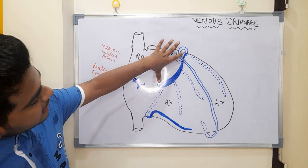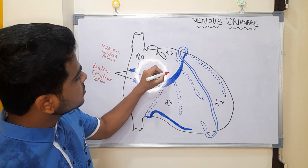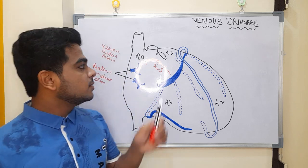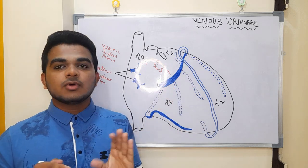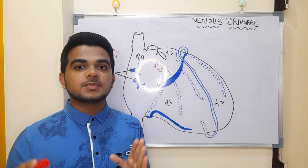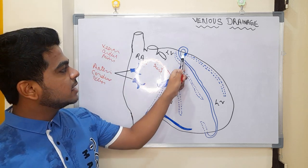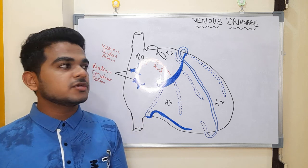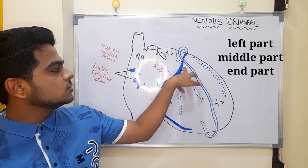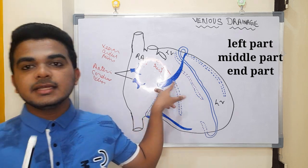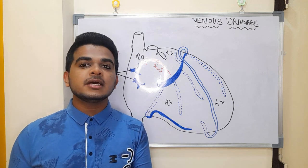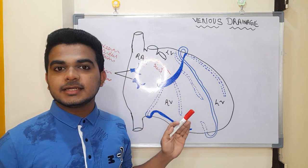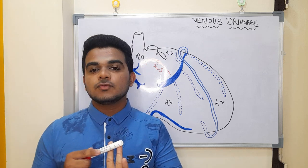Moving to the largest vein — the coronary sinus. This highlighted portion is the coronary sinus. The coronary sinus is present posteriorly, so the dotted line structure indicates it is present on the posterior surface of the heart. The coronary sinus itself has three parts: the left part, the middle part, and the ending part. According to these parts, the veins drain into the coronary sinus, and finally it opens into the right atrium from the posterior wall.